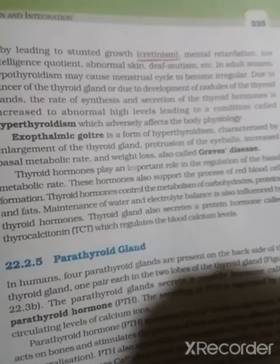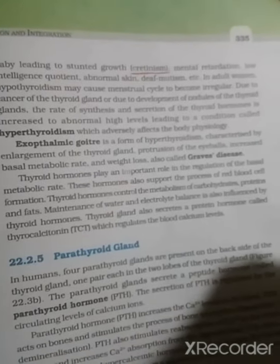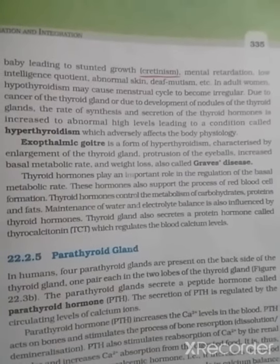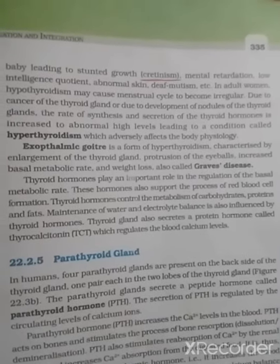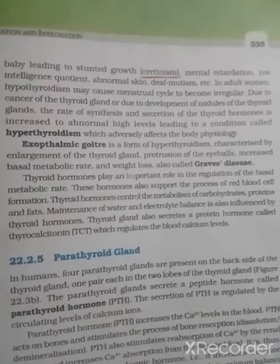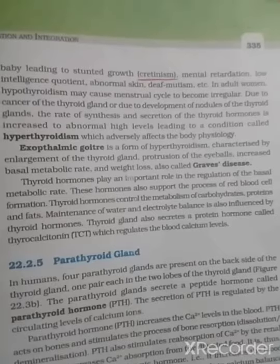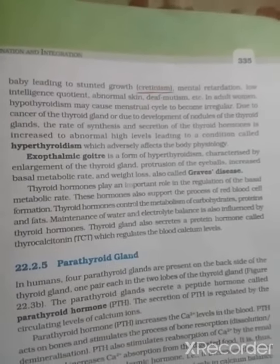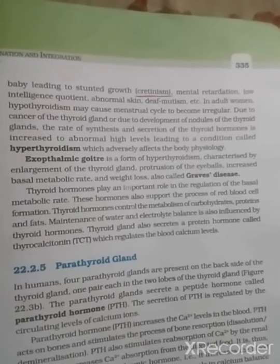Thyroid hormones play an important role in the regulation of BMR. These hormones also support red blood cell formation and control the metabolism of carbohydrates, protein, and fat. Thyroid hormones also influence water and electrolyte balance. The thyroid gland also produces thyrocalcitonin (TCT) from parafollicular cells, which regulates blood calcium levels.